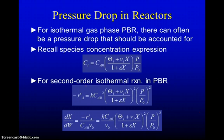If we go back to our concentration expression, the concentration of a species is given by the inlet concentration of A times theta, that's the ratio of the initial concentration of this species to A, plus a stoichiometric coefficient for that species times conversion over 1 plus epsilon times the conversion. That accounts for volume changes due to reaction.